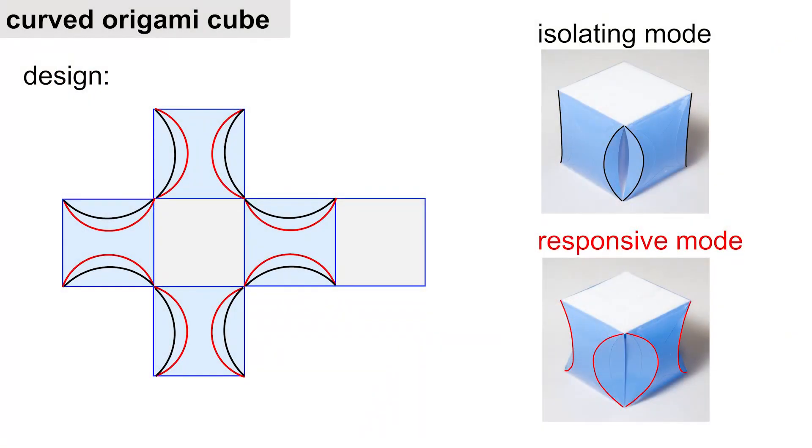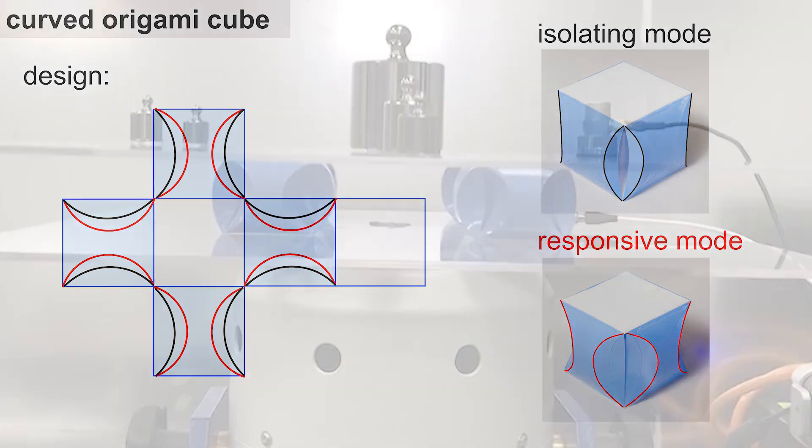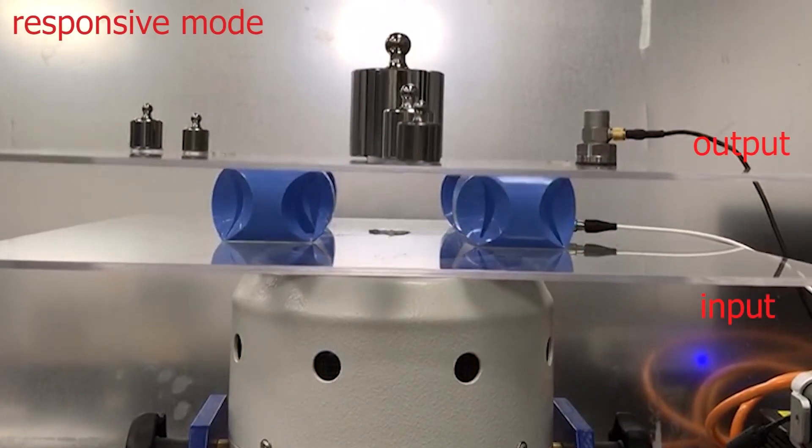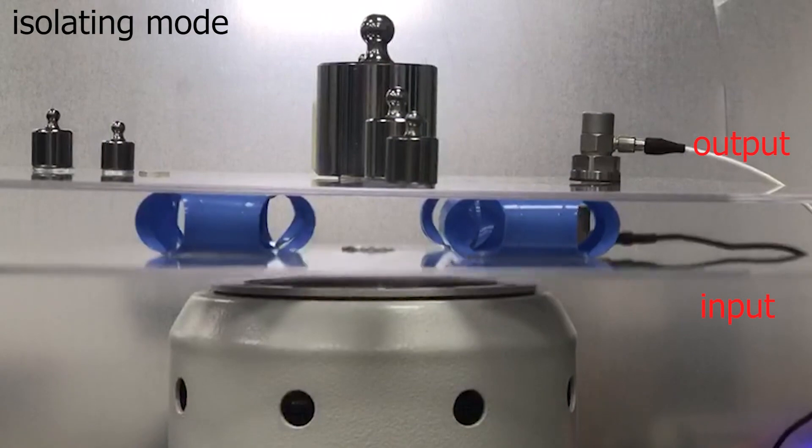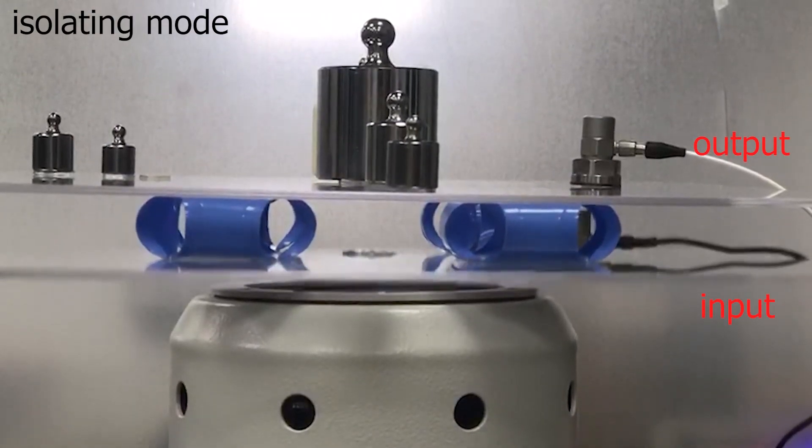We also created curved origami cubes to tune the transmission of force and motion. The positive stiffness mode transmits motion and makes a structure more responsive, and the zero stiffness mode isolates the motion.